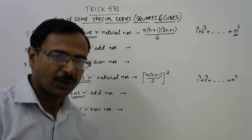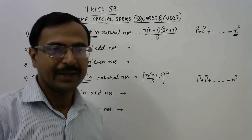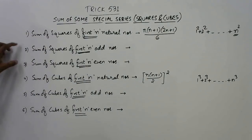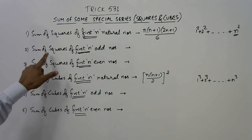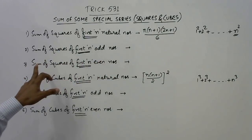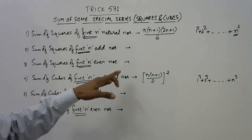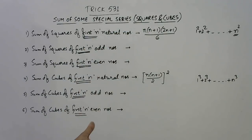These two formulas are very common. What we don't know are the second, third, fifth, and sixth formulas — that is, the sum of squares of first n odd numbers and the sum of squares of first n even numbers. Normally people use a longer method to solve these, but I'll give you the direct formula.